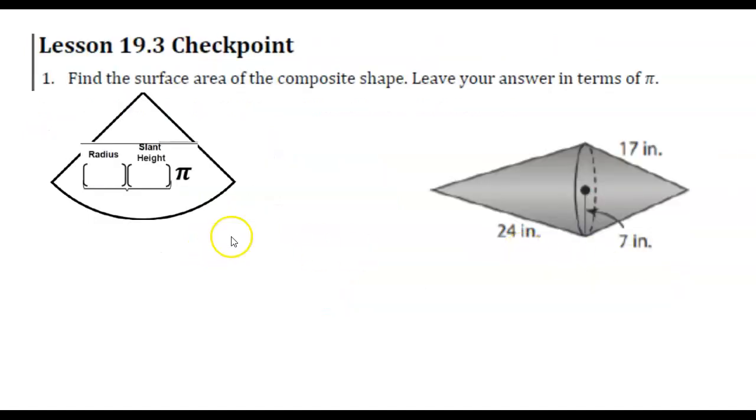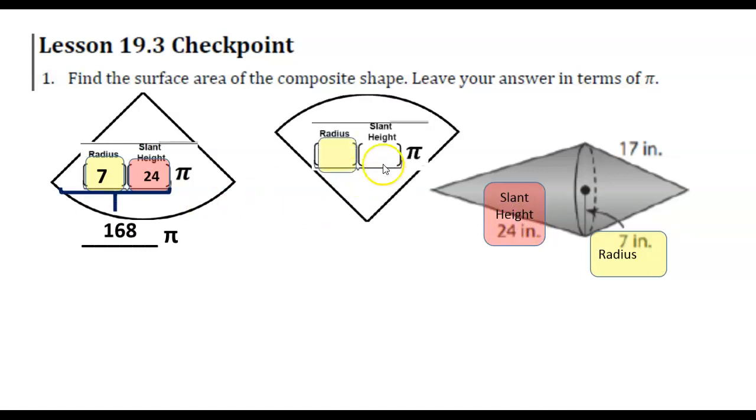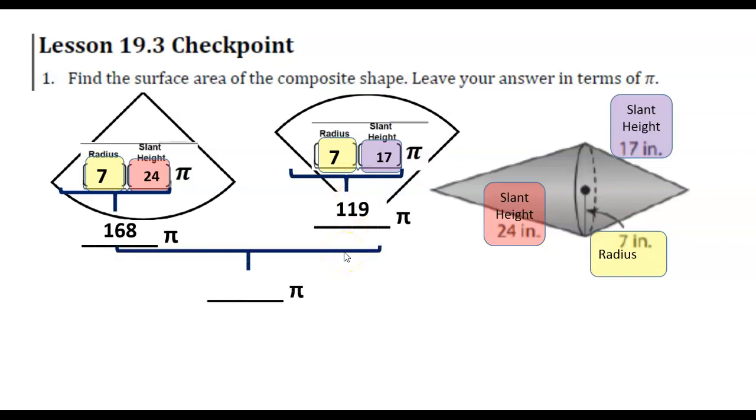And we're here for checkpoint. What's nice about this one is they do tell us what the radius is. They do tell us what the slant height is. So we can work that out. For our other cone, we know what the radius is. We know what our slant height is. Take a moment and work that out. Unpause. And then we're just adding those together. So it's very similar to the one that we saw before in the homework packet.